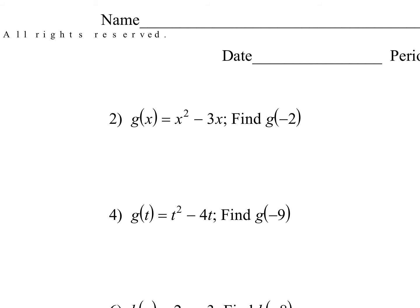So what should I do? Plug it in. So I have negative 2 squared minus 3 times negative 2. Negative 2 squared is negative 2 times negative 2 — whatever that number is times itself. What's negative 2 times negative 2? Positive 4. What's negative 3 times negative 2? Positive 6. And what's 4 plus 6? 10.